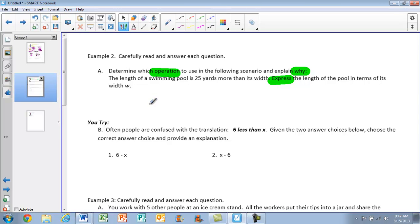The length of a swimming pool is 25 yards more than its width. Well, whatever the width W is, the length is 25 more than this. So I'm just going to write here because I'm going to have to determine the operation and explain why. Whatever the width W is, the length is 25 more than this. So length of the swimming pool is 25 more than means plus the width.